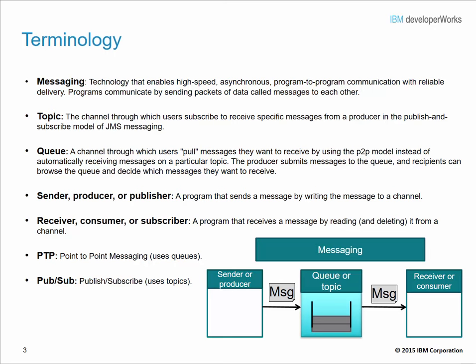As you can see in the diagram at the bottom right, the way messaging works is that a sender, producer, or publisher — which is a program that sends a message — will write a message to a topic, and then a receiver, consumer, or subscriber — which describes a program that receives a message — actually receives that message.